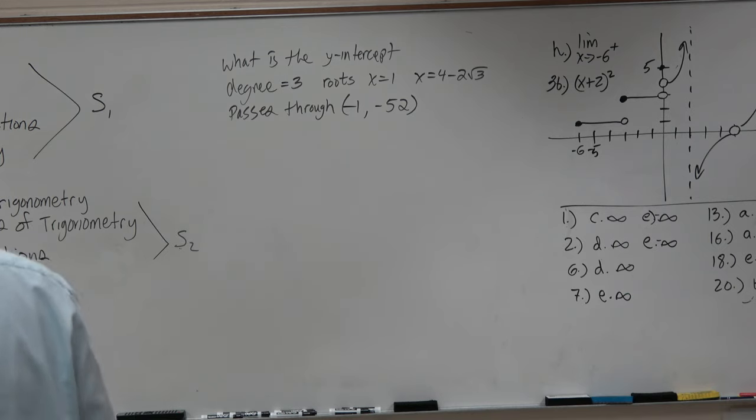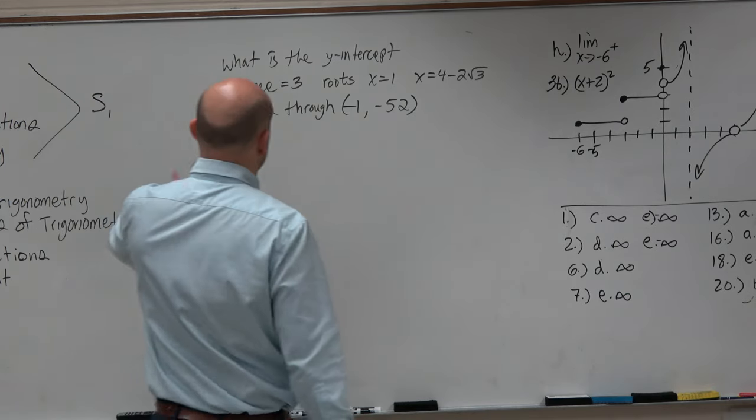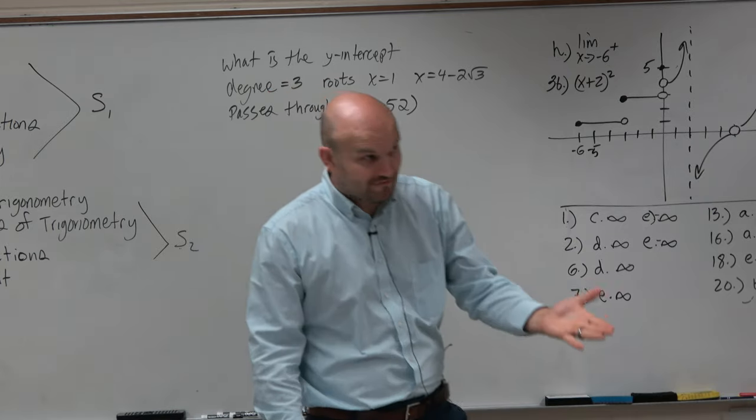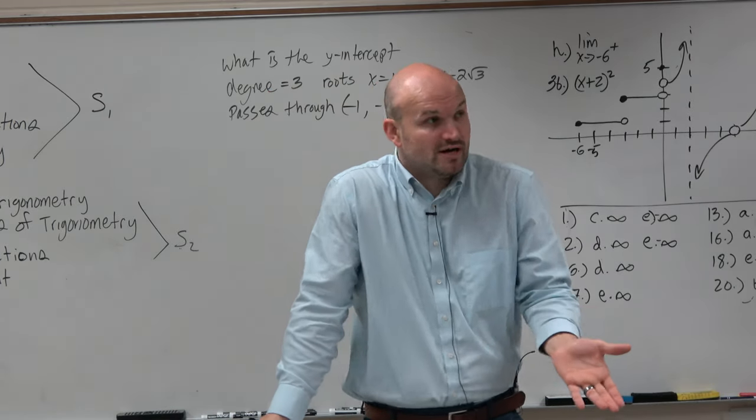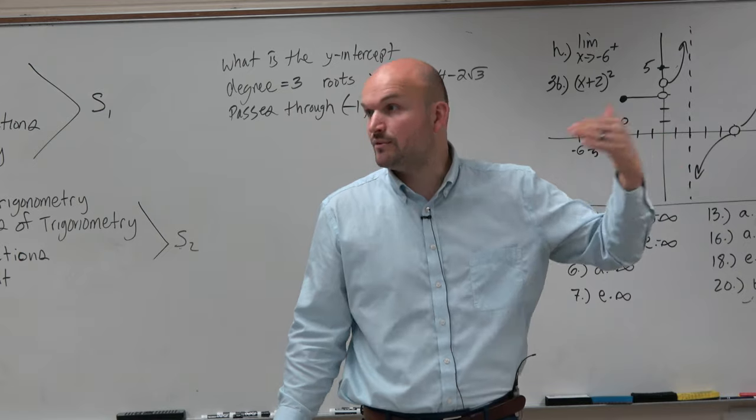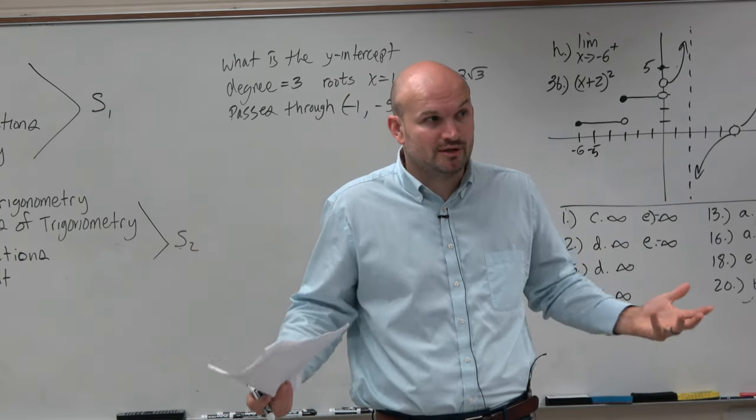The first step in this problem is identifying what the equation is. Because we know if we want to find the y-intercept, we either need to graph this, but we have to have an equation to graph it, or we just plug 0 in for x to find the y-intercept. But again, we have to have the polynomial equation.